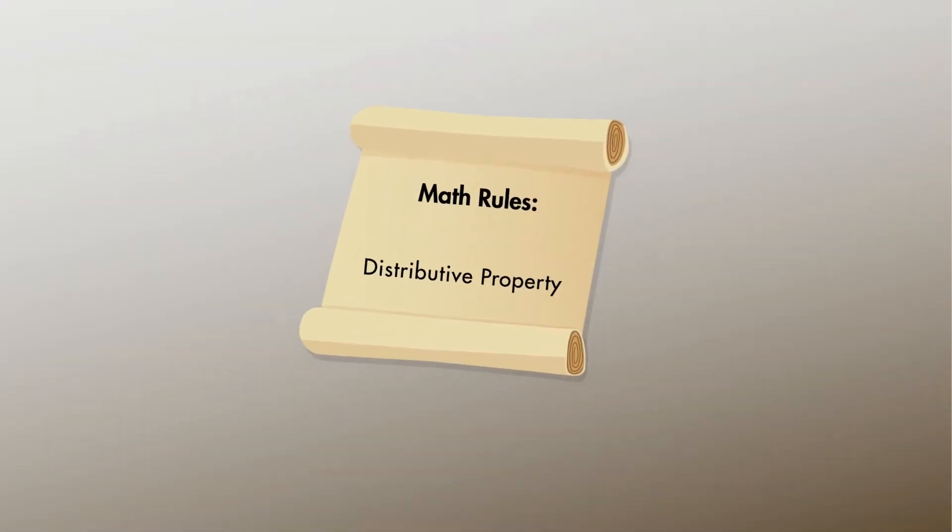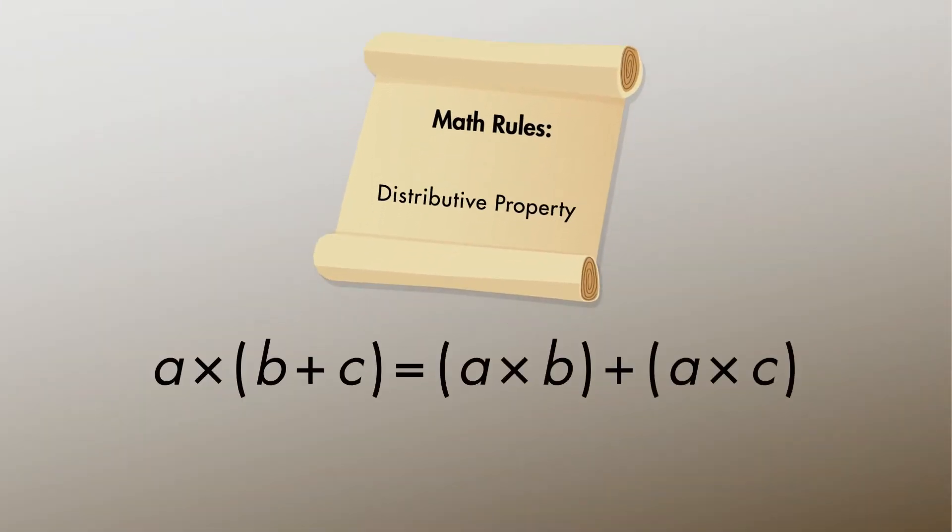The distributive property allows us to break a number into parts to make a problem easier to solve. Then we distribute the numbers in the number sentence. Let's see what this means.